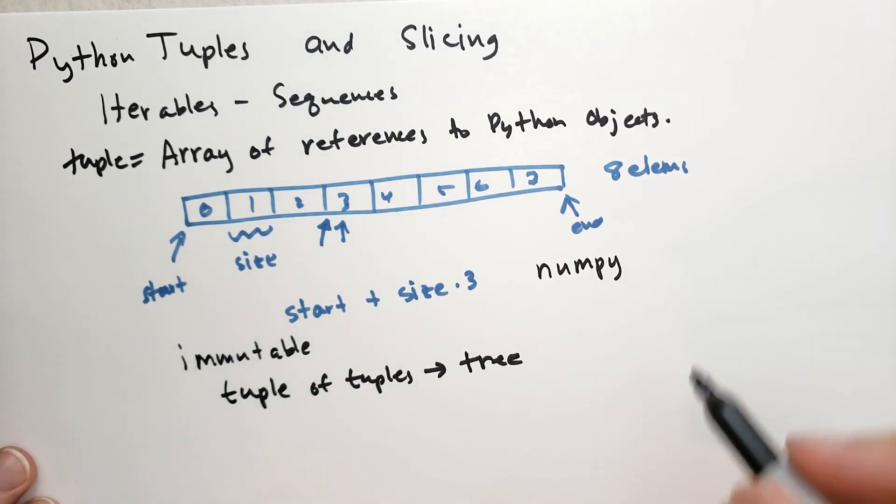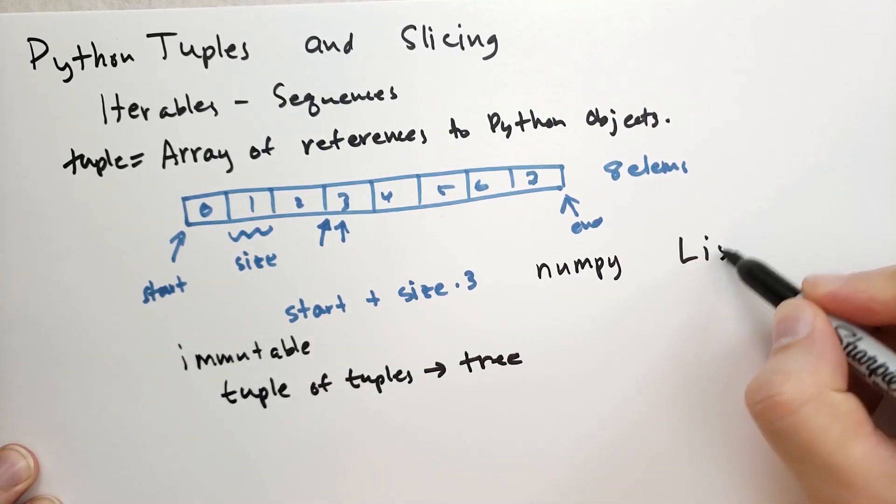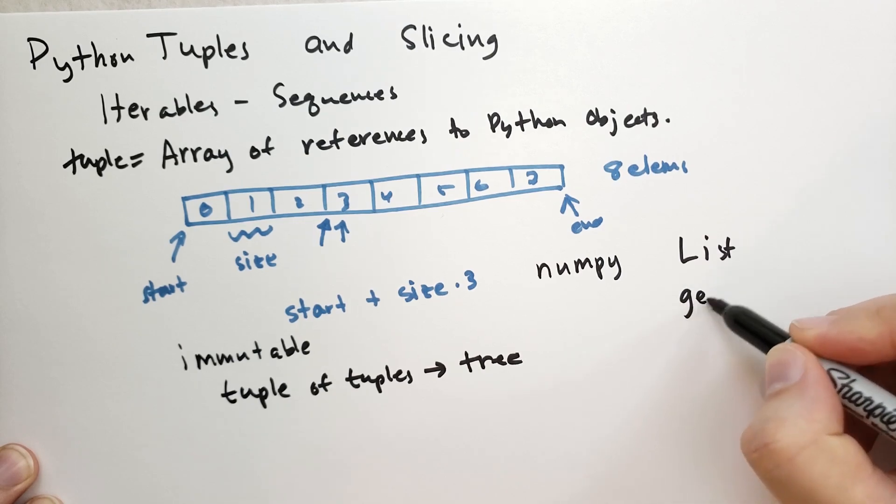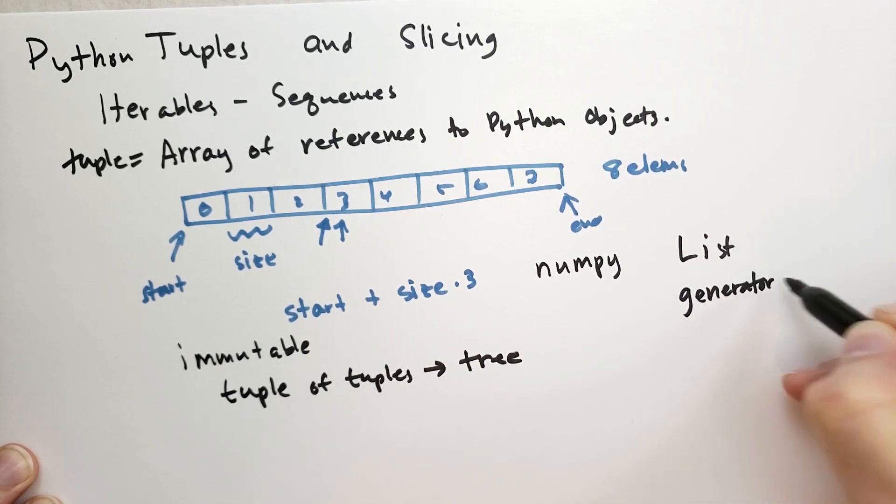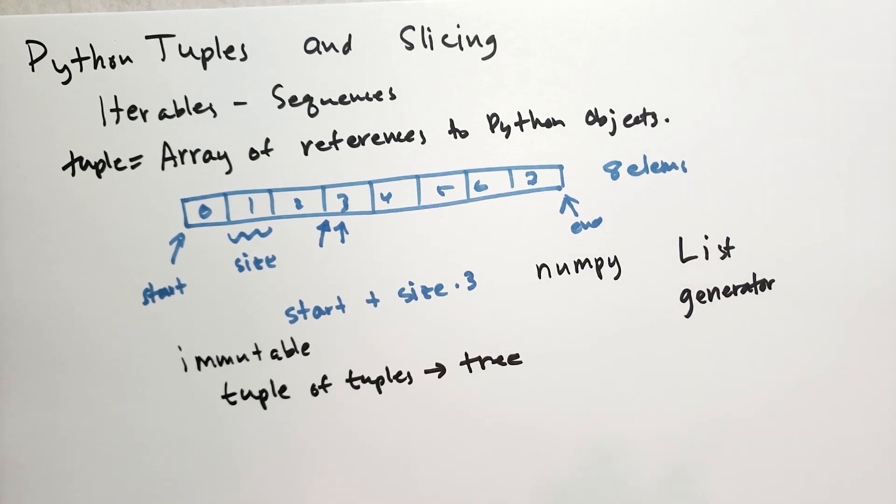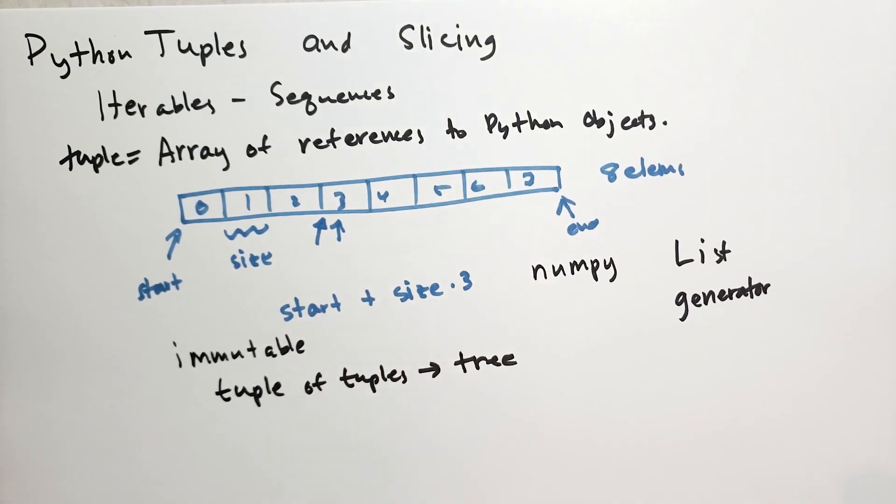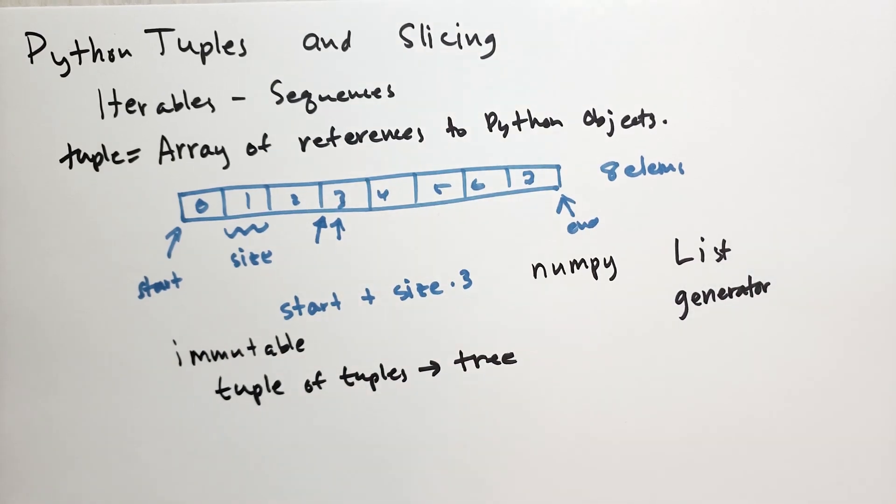When you're thinking of using a tuple, you should always ask yourself whether or not you should use a list or a generator instead. A list is a mutable tuple, and a generator generates values on the fly. These might be perfectly good solutions for the problem you're looking at.